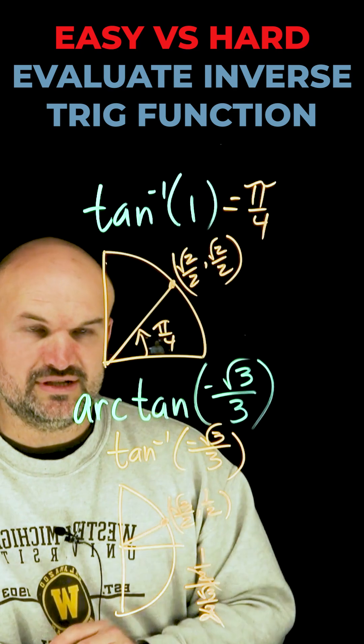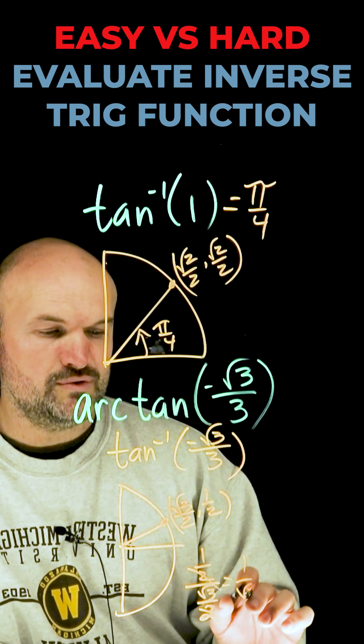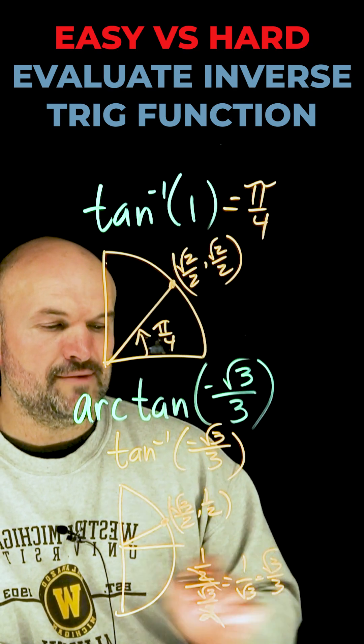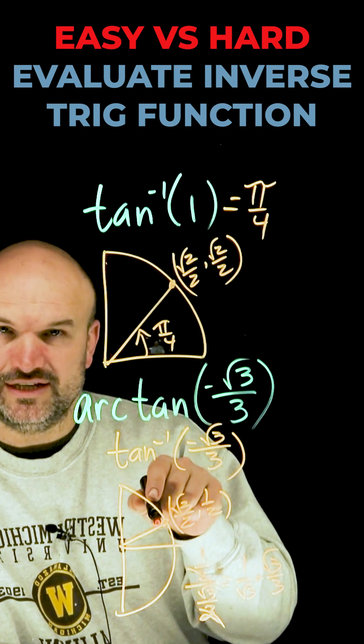See, first thing, the twos are going to divide out. Then I have 1 over square root of 3, which I can rationalize the denominator, square root of 3 over 3. However, that's the positive version looking in the first quadrant.